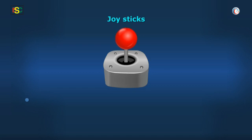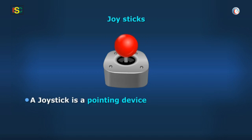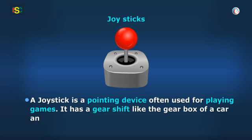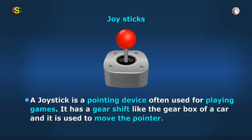Correct, Vidya. A joystick is also a pointing device often used for playing games. It has a gear shift like the gearbox of a car and it is used to move the pointer on screen. Mostly, the button on top of it functions as a select option.